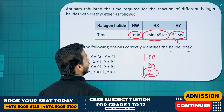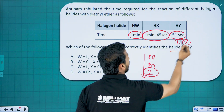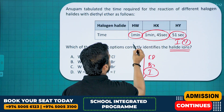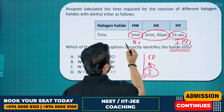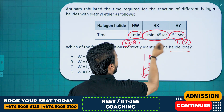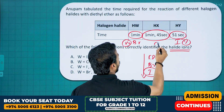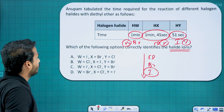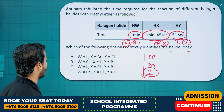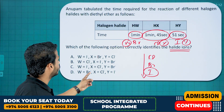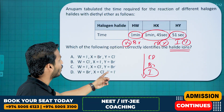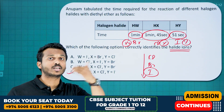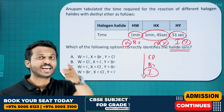The 51-second reaction is iodine, that is Y. The next one, X, is bromine — that is W. And the highest time-taking is for chlorine, that is X. So the answer is: W is bromine, X is chlorine, and Y is iodine. Option D. Down the group, halogen reactivity increases.